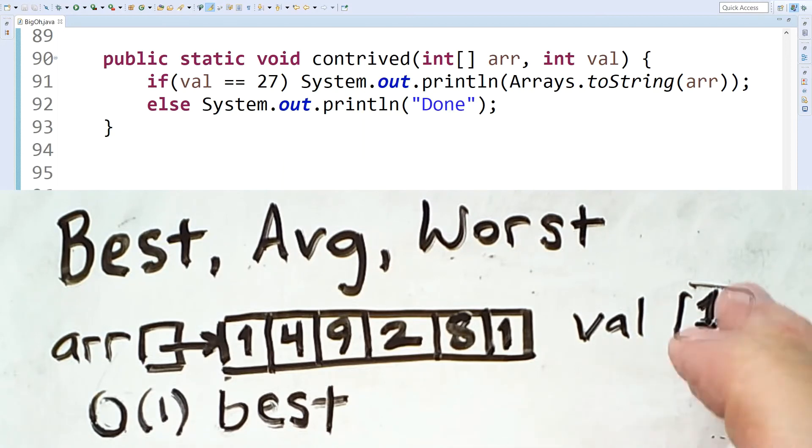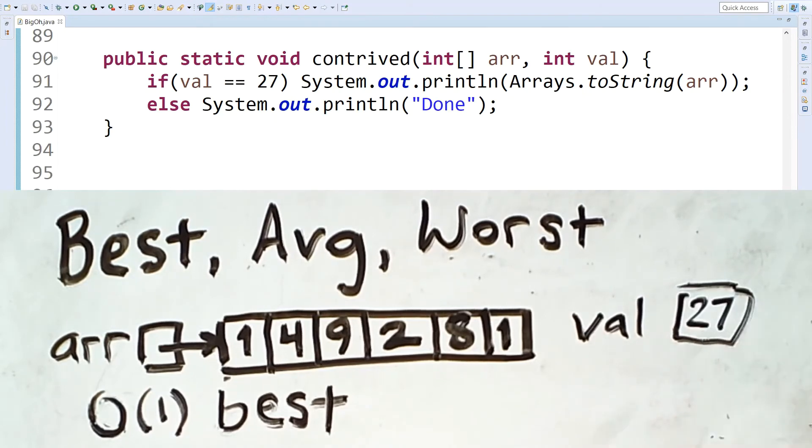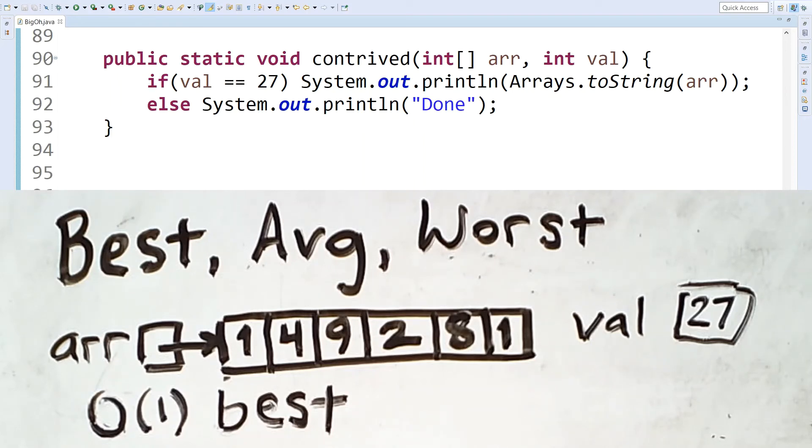However, what if val is equal to 27? Well, if value is equal to 27, then we call a method arrays.toString on the array. Now, this is a method that converts the entire contents of the array to a string, and that is then being printed by the println method.